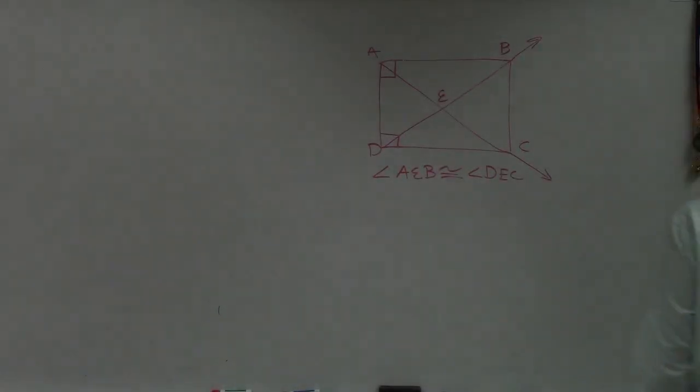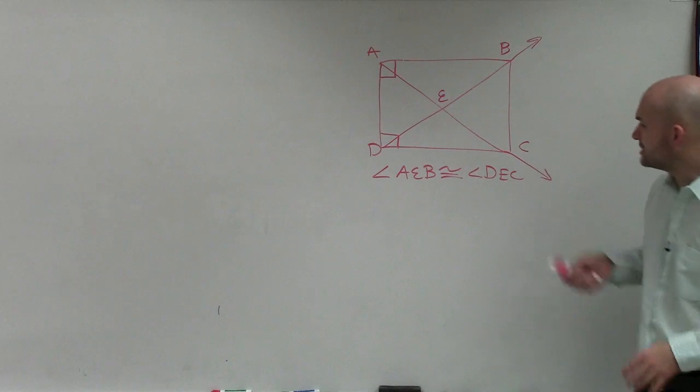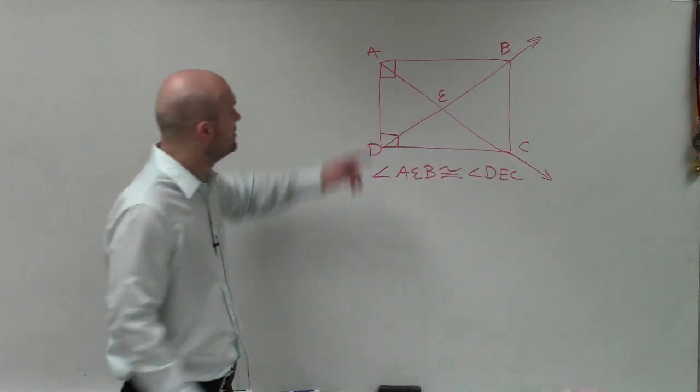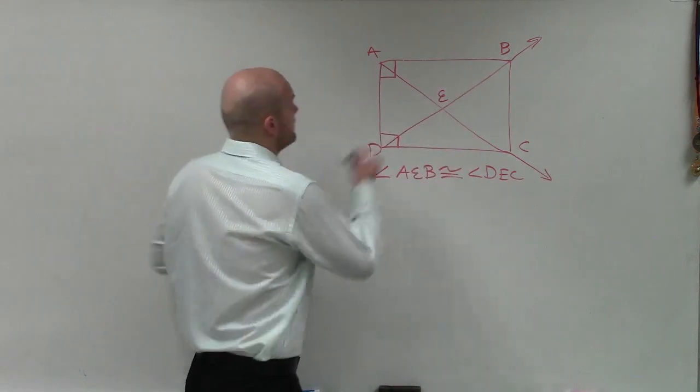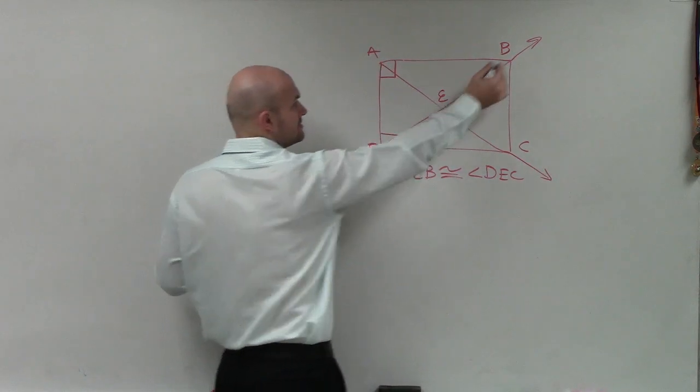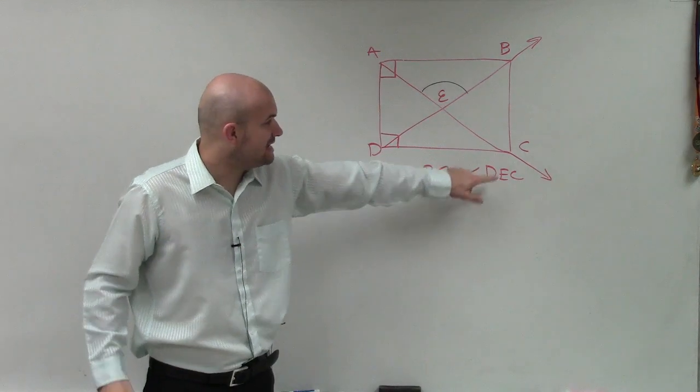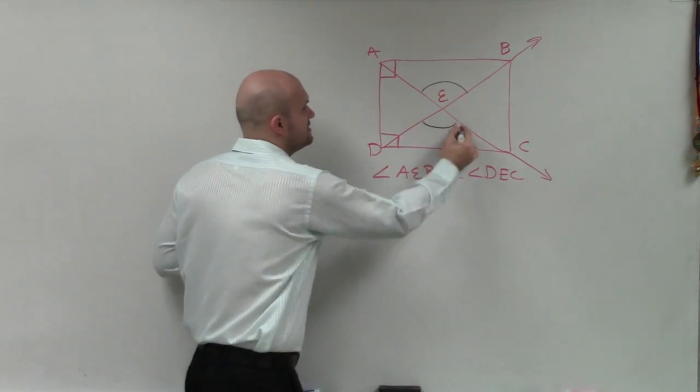It's asking us to determine if the angle A, E, B is congruent to the angle D, E, C. So the first thing we need to do is identify those two angles. So A, E, B, A to E to B is this angle. Then D to E to C is this angle.